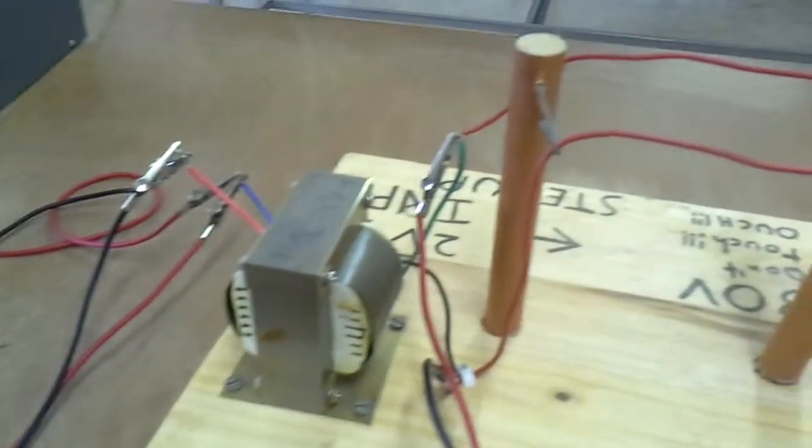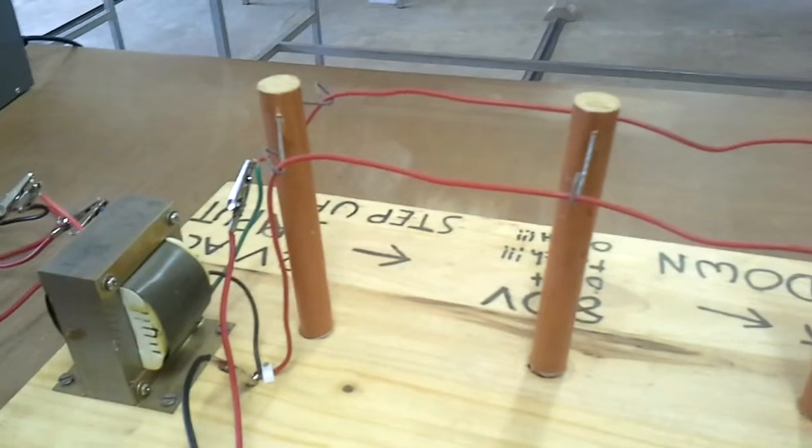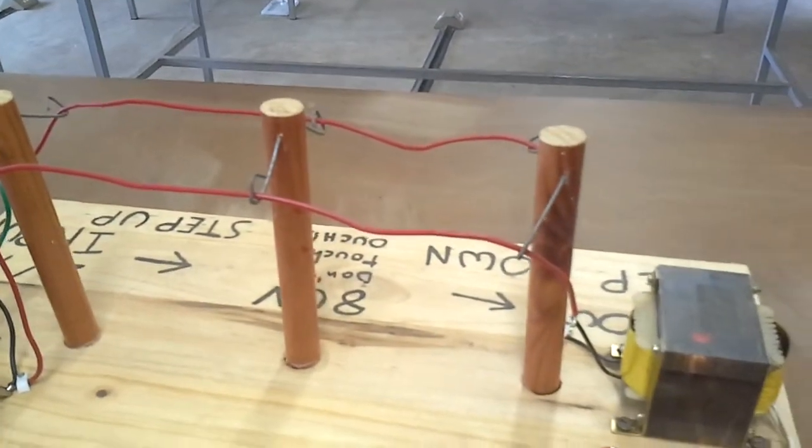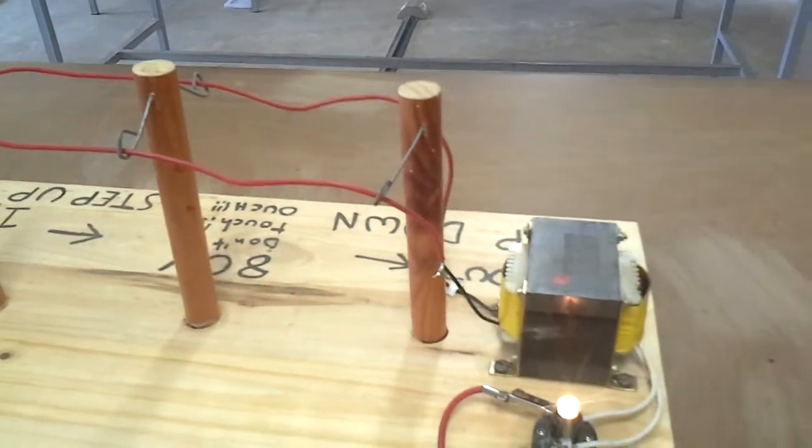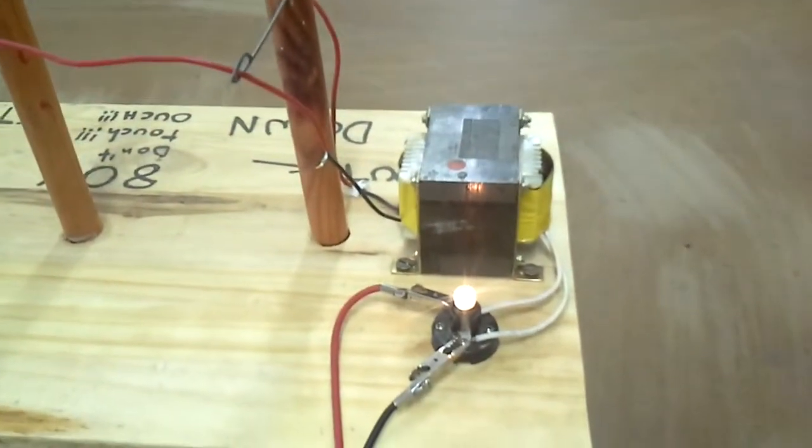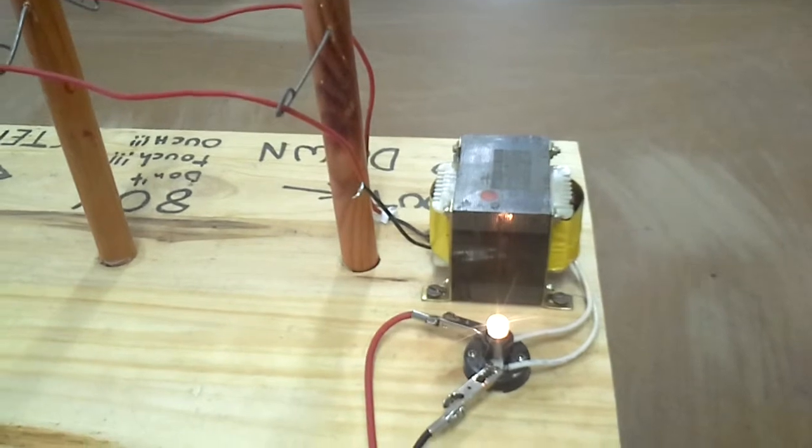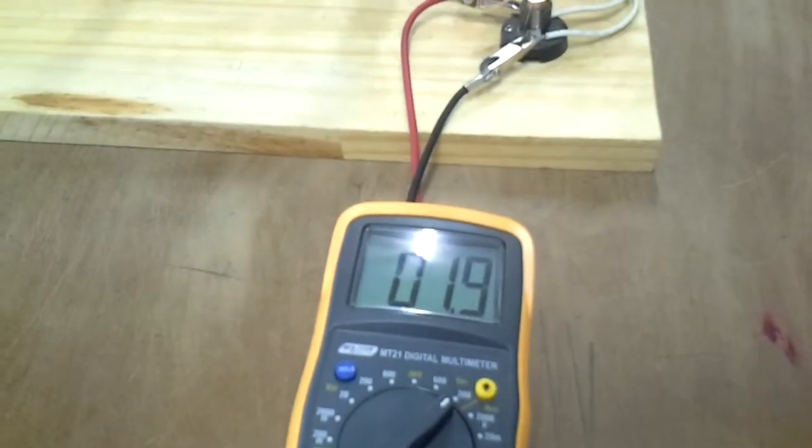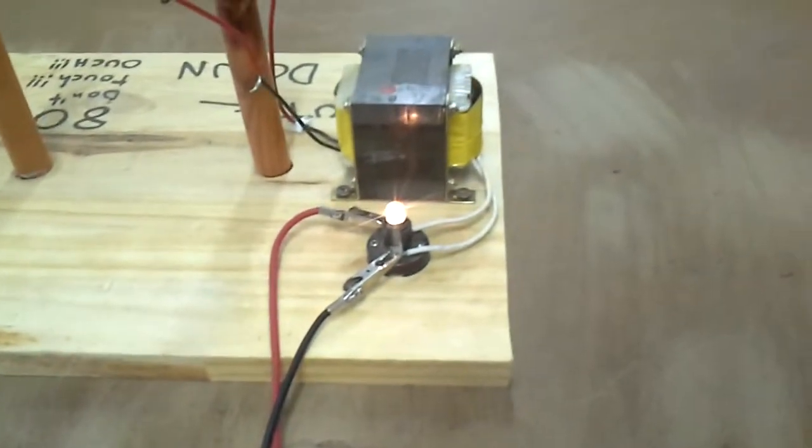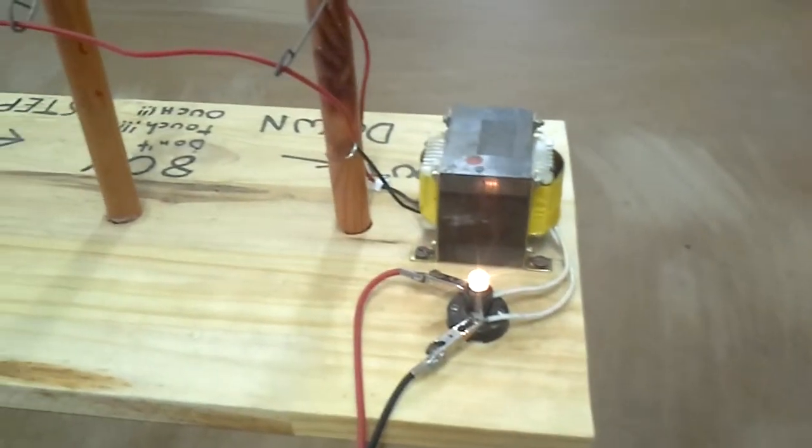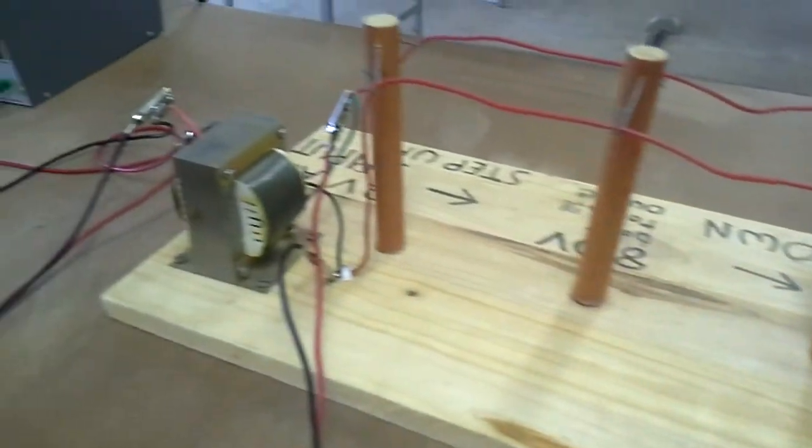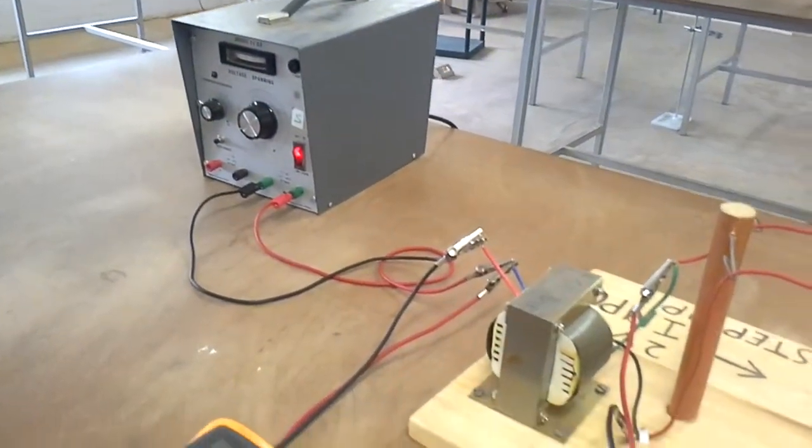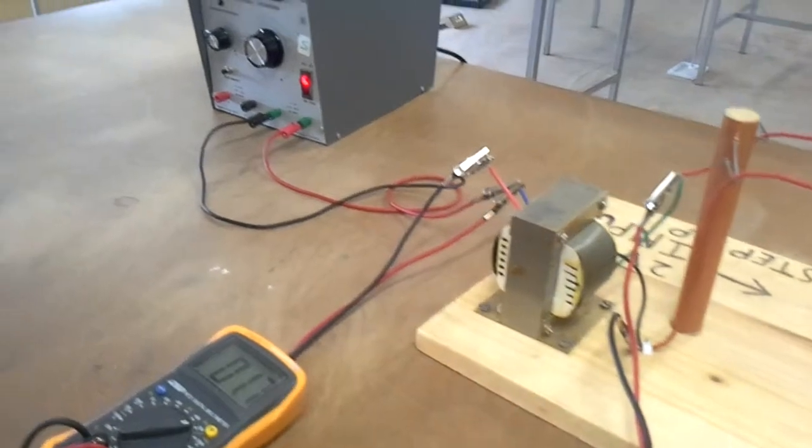So the voltage would increase, decreasing the current to reduce heating in the wires and make the system more efficient. And then finally here we've got our step down transformer, and we're stepping back down to about 1.9 volts and that's just lighting our little light bulb here.